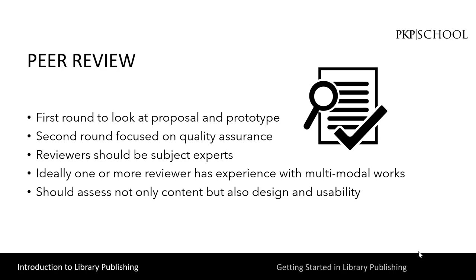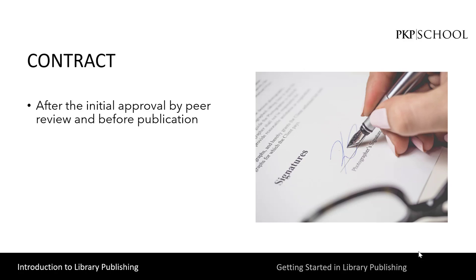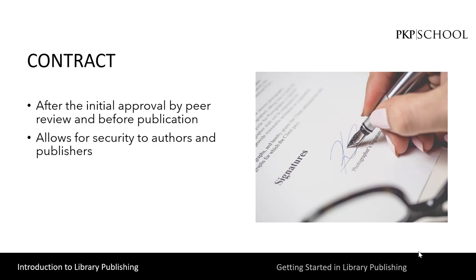Peer reviewers should be given guiding questions that include questions about design and usability. To accommodate the complex production schedules and high risk in producing a new genre, it is recommended that contracts are offered after the initial approval by peer reviewers but before the publication has been completed. Having a second round of reviews ensures the quality of the publication. Issuing a contract at a relatively early stage provides security to authors as well as publishers regarding the amount of work required to develop such a publication.